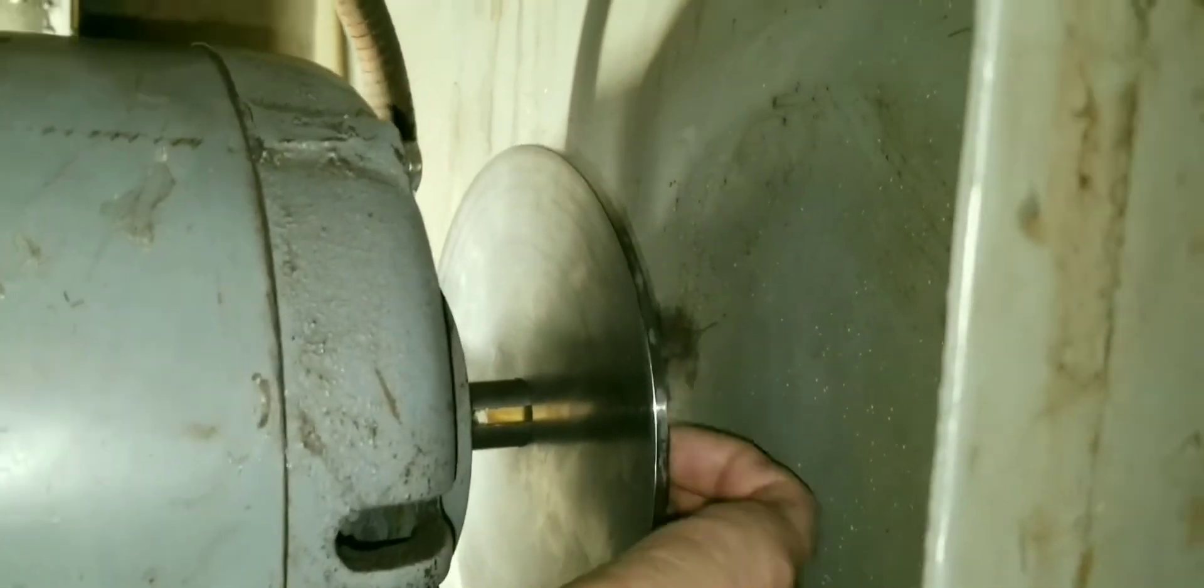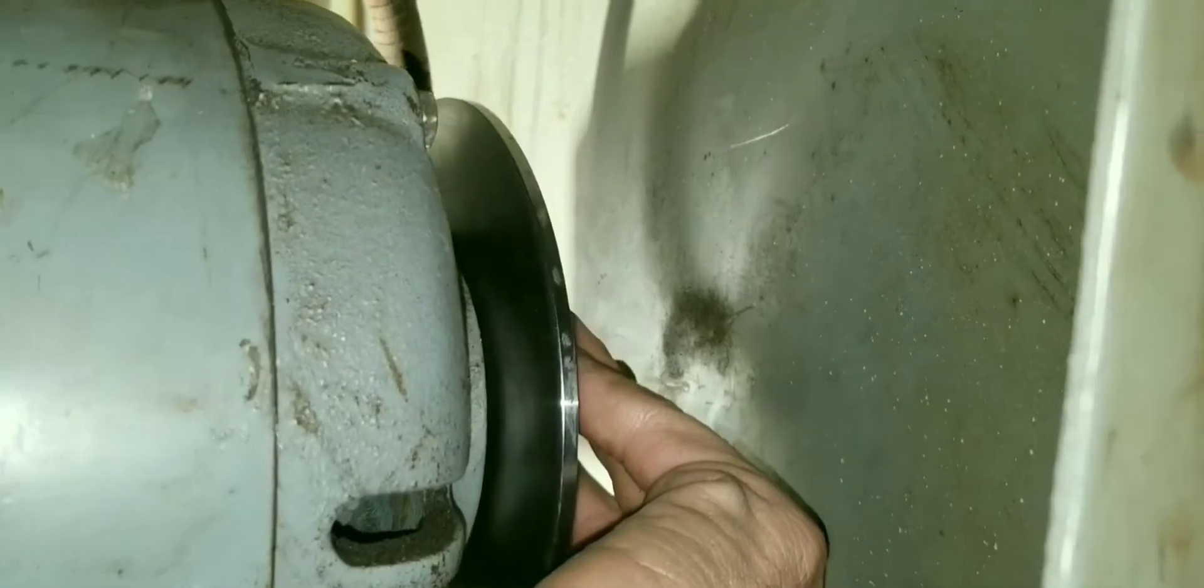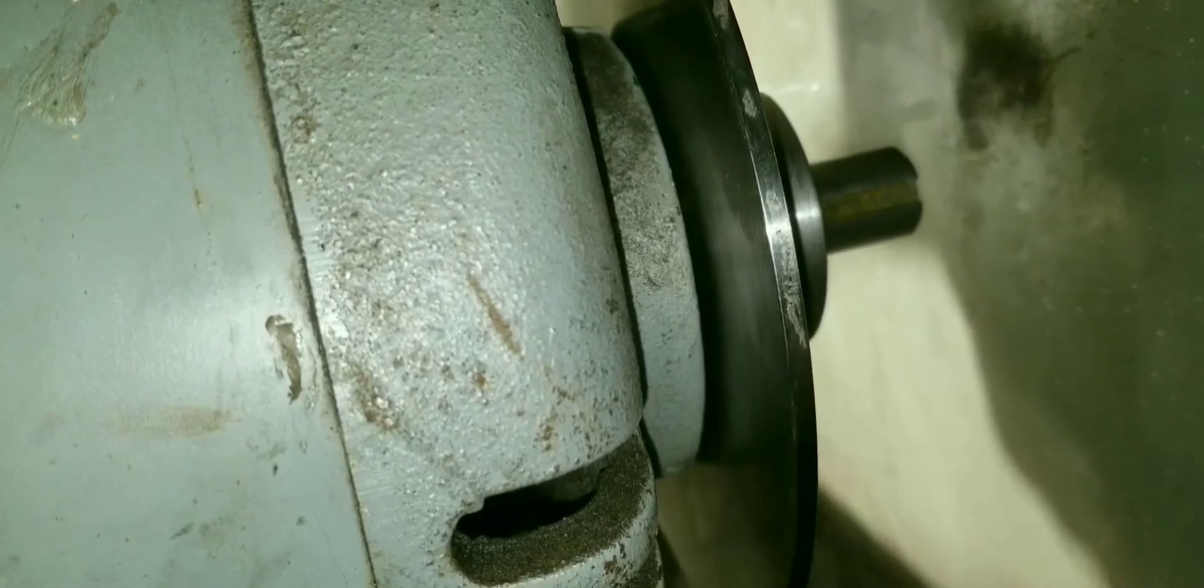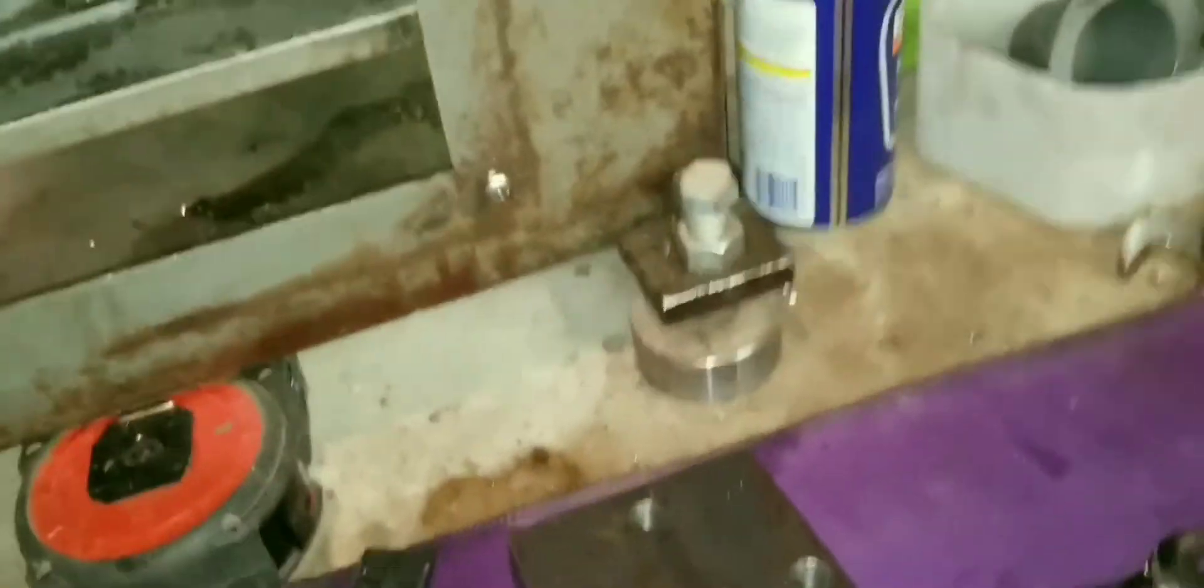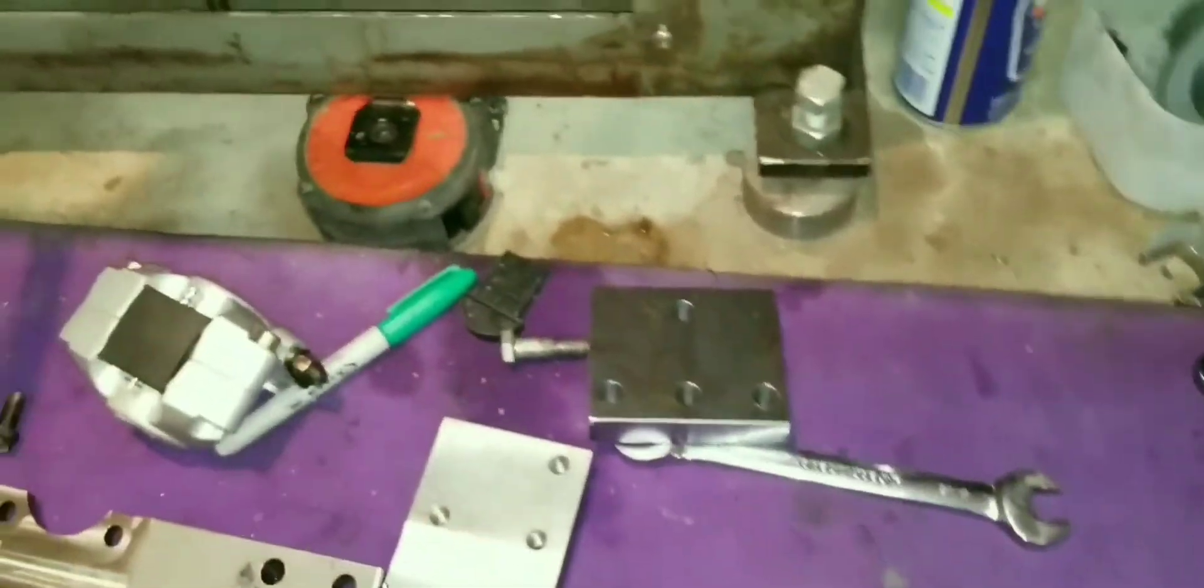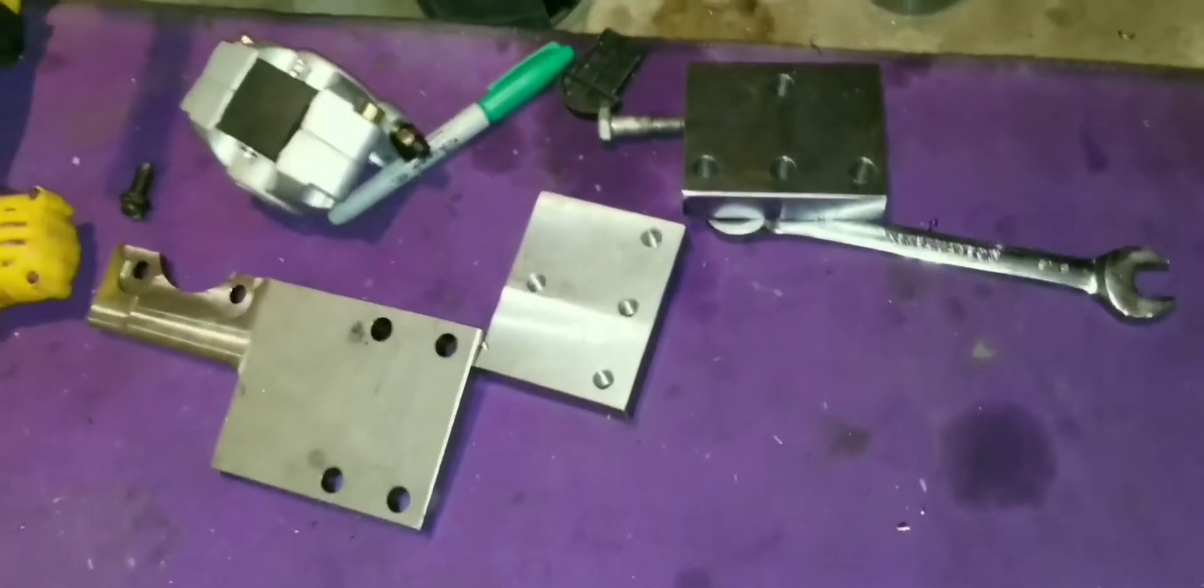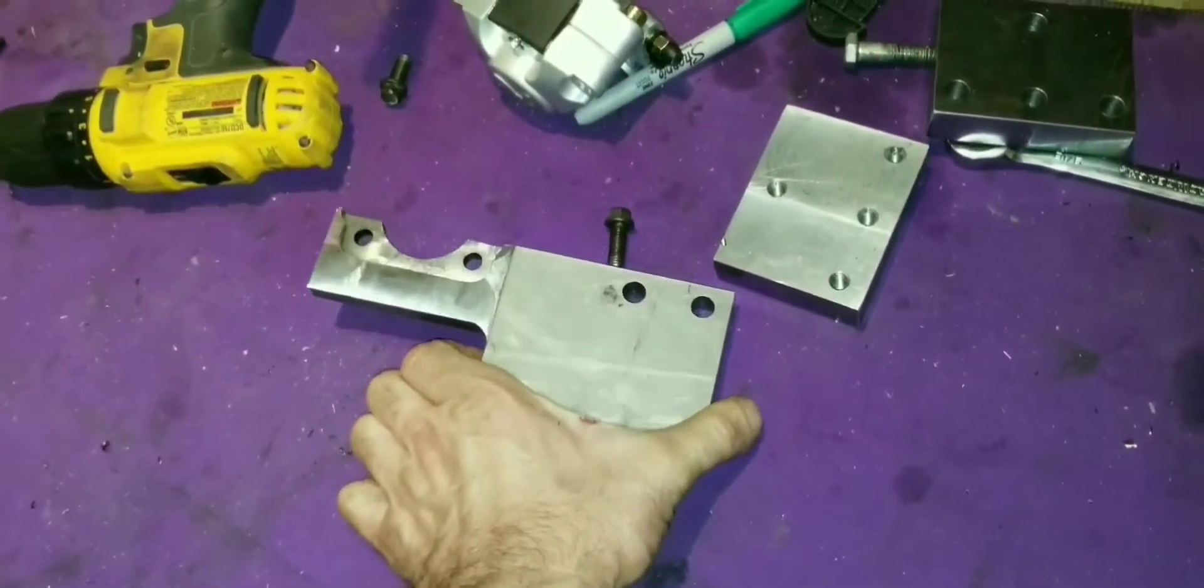I got that made. I put a hub on one side and then the disc. I slid it on there. Now I'm in the process of lining everything up. This is what the brake is going to mount to.